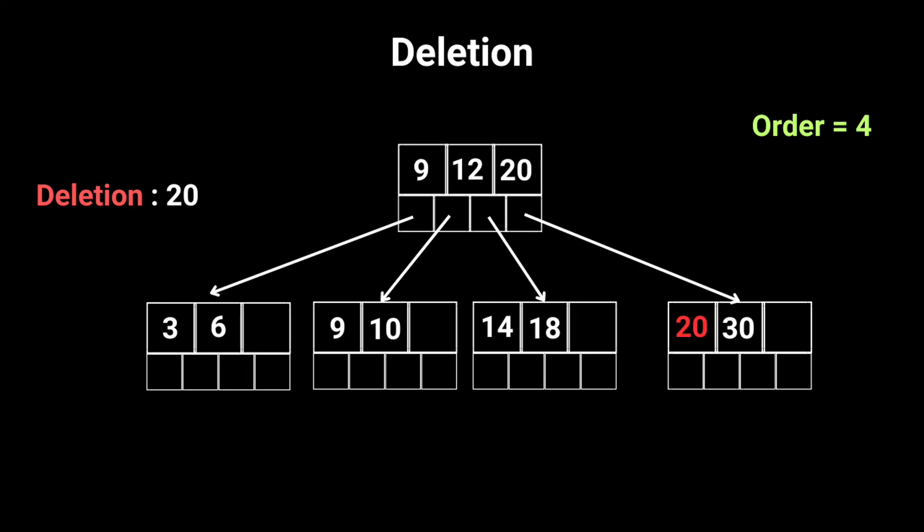Let's tackle deletion now. We'll use the same tree as we did for the insertion example. First up, we delete 20 from the tree. So, we simply remove 20 like this. But here's where it gets crucial.